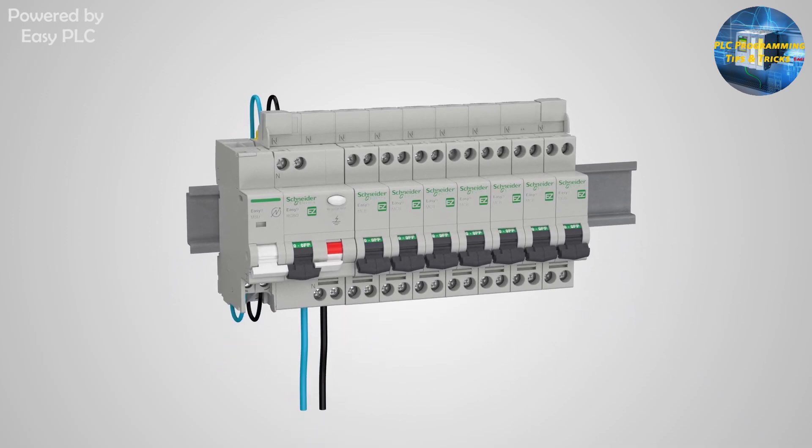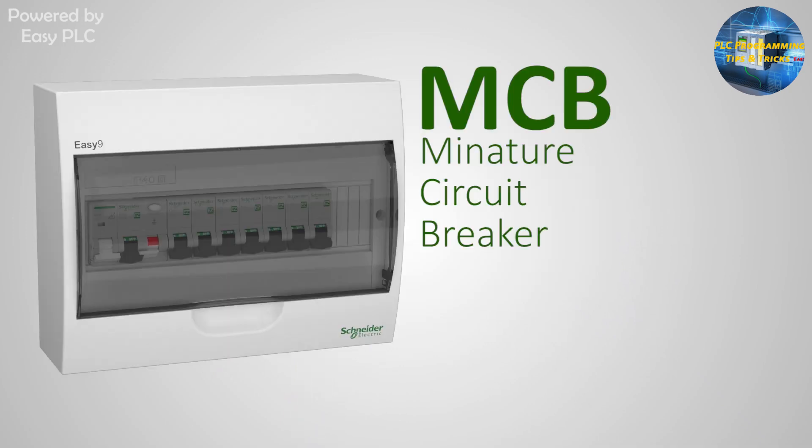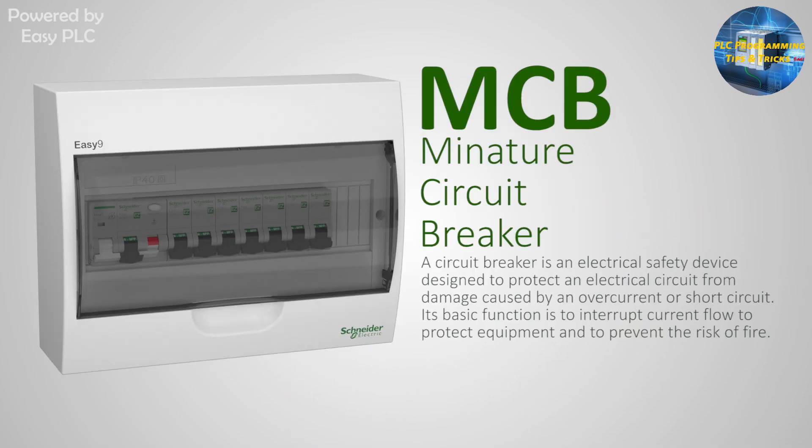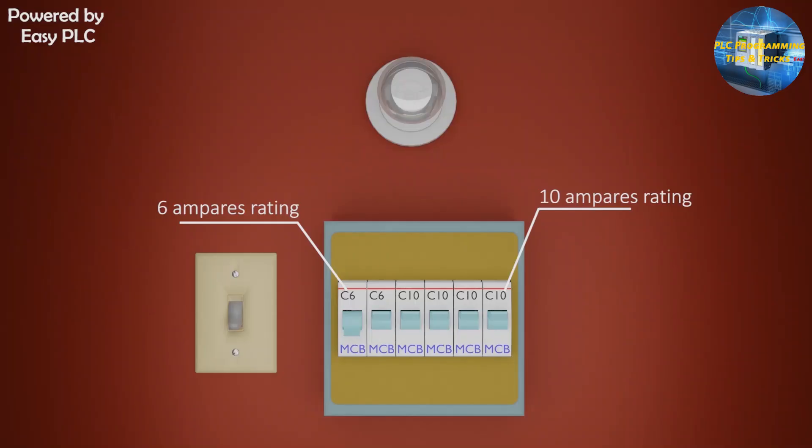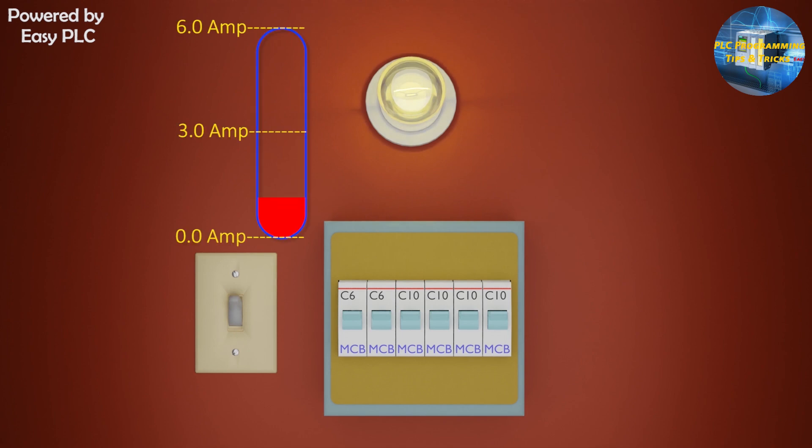In case of any short circuit these MCB trips and cut off the electric power. So we can say that MCB is an electrical supply switching and safety device. MCBs have a predefined current limit or current rating. If the current passing through the MCB is more than the current limit of the MCB due to overload or due to short circuit...